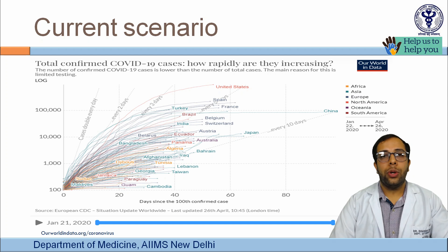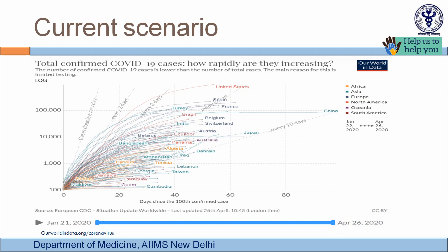As of 26 April, total confirmed COVID-19 cases worldwide exceeded 2.9 million. The disease started in China with cases increasing exponentially, doubling every two to three days in some countries. China, France, and Italy have moved toward a plateau phase. The US is transitioning from log phase to plateau phase. India is still somewhere between log phase and plateau phase, with various measures being taken to flatten the curve.